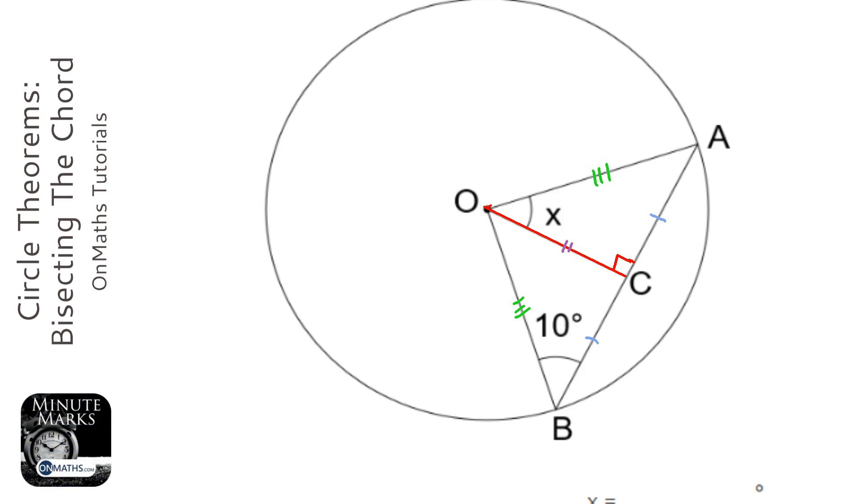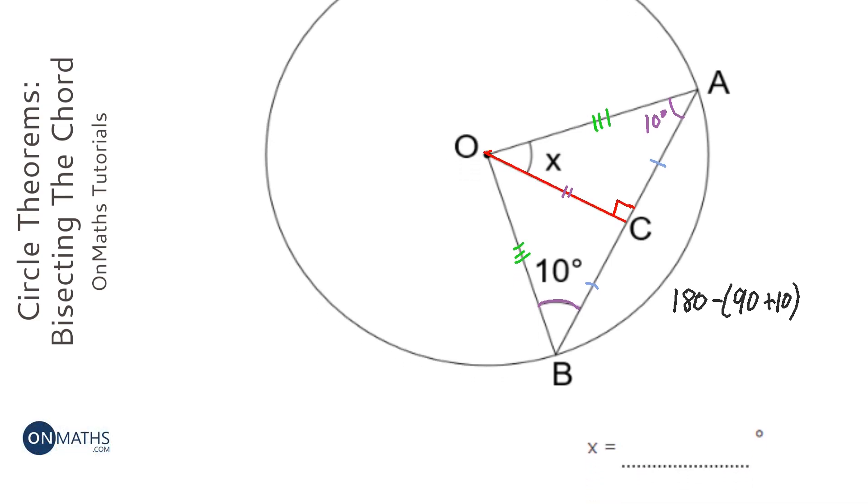Therefore, if that's 10 degrees down here, it's also going to be 10 degrees here. And then the answer to this question is nice and easy, because it would be 180, take away the 90 degrees and the 10 degrees that we know, which will equal 80 degrees.